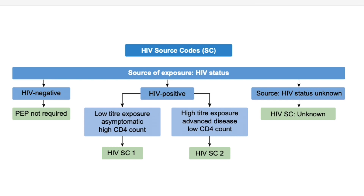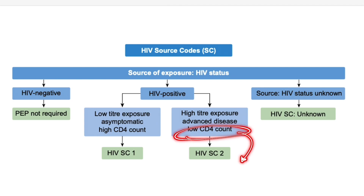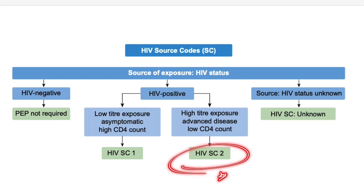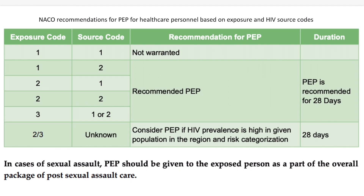At a primary level, knowing the HIV positive status is most vital, because based on that you can decide on post-exposure prophylaxis. If viral titers are very low, exposure is asymptomatic, and CD4 count is very high, the source code is 1 (HIV SC1). If viral titers are very high, there is advanced disease, and CD4 count is low — meaning the patient has poor immunity — the source code is 2 (HIV SC2).